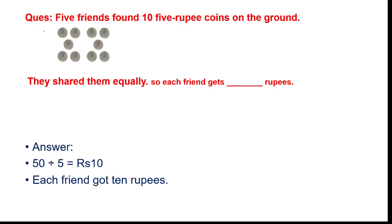What is given in the question? Five friends found ten five-rupee coins on the ground and they shared them equally. Now you have to tell how much money each friend gets. Ten five-rupee coins means ten multiplied by five rupees. So ten into rupees five equals rupees fifty.